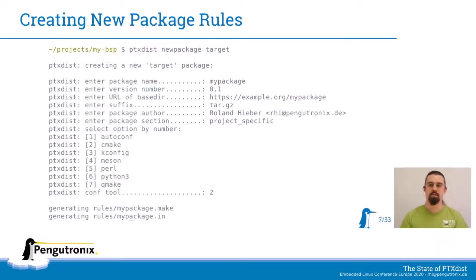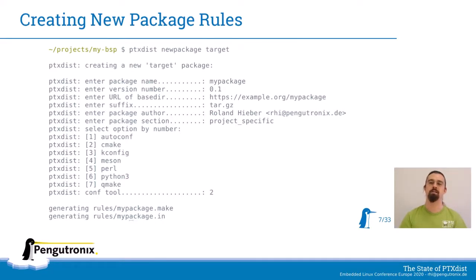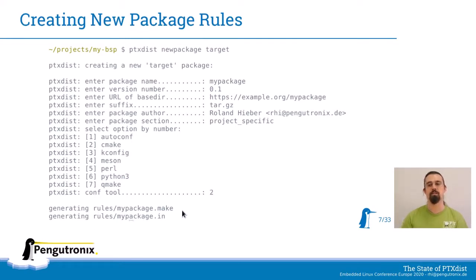You can just use the PTX-DISTS new package wizard to create a new target package. It asks you some nice questions like what is the package name, what's the version, where can you download it from, what is the build system, and so on. Then it generates the right files in the rules directory — in this case, mypackage.make is the makefile that contains all the recipes for building your package, and the .in file is the KConfig snippet for the menu that gets included.